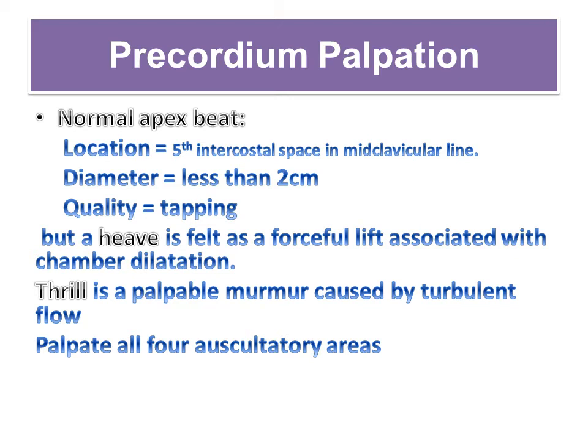Thrills caused by turbulent flow are transmitted through bone. Use the ball of your hand and press firmly down in the older child, and the tip of your fingers in younger children. Palpate all four auscultatory areas.